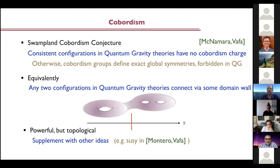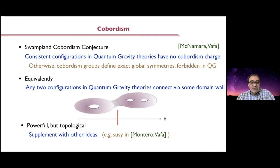This conjecture is powerful but it is topological in essence, so most of its consequences by itself are just topological. But they are very powerful if you supplement this with extra ingredients — for instance, if you add the requirement that you're studying supersymmetric configurations, as in work done by Montero and Vafa, you can argue many things about the landscape of compactifications of any possible string theory, and work your way towards string universality: any consistent theory of quantum gravity should be connected with a string theory in one way or another.